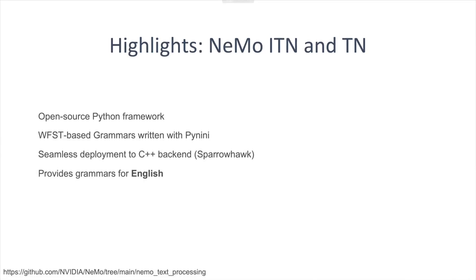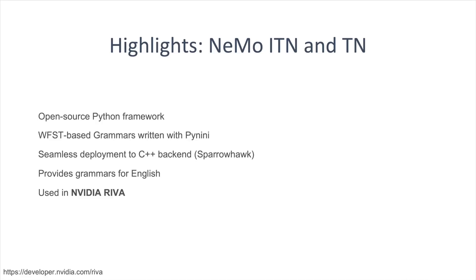Currently, the system provides grammars for English and is going to be extended to other languages like German, Russian, Spanish, etc. The system is deployed in the conversational AI product NVIDIA Riva.